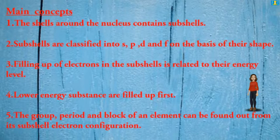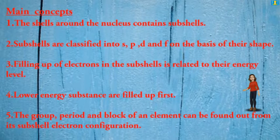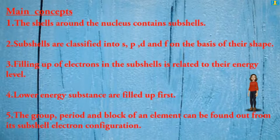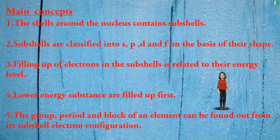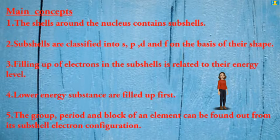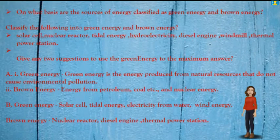Main concepts: the shells around the nucleus contain subshells. Subshells are classified into S, P, D, and F on the basis of their shape. Filling up of electrons in the subshells is related to their energy level — lower energy subshells are filled up first. The group, period, and block of an element can be found from its subshell electron configuration.